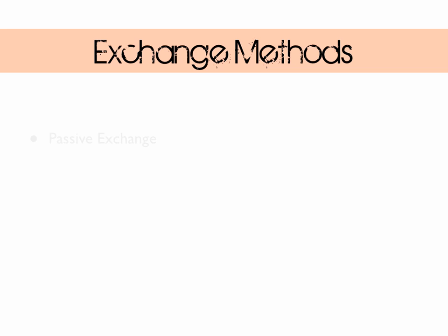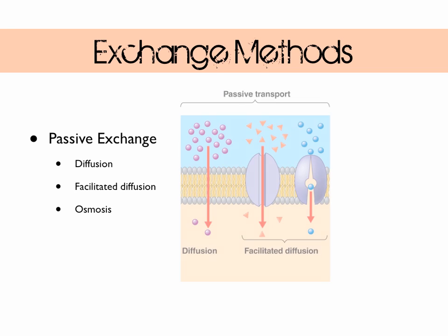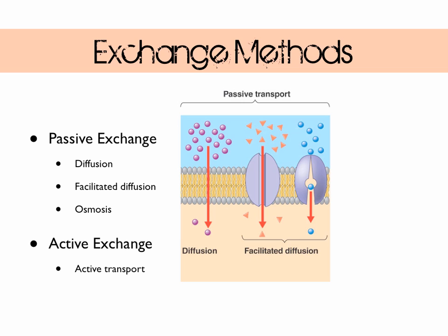So how are these substances exchanged? We've got to ignore heat for this one. There's passive exchange, which consists of diffusion, facilitated diffusion, and osmosis. And we've got active exchange, which is active transport, where energy in the form of ATP is required.